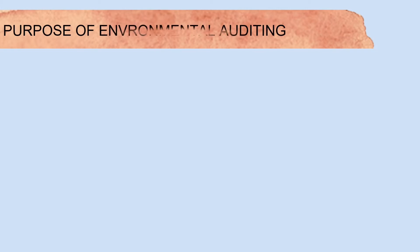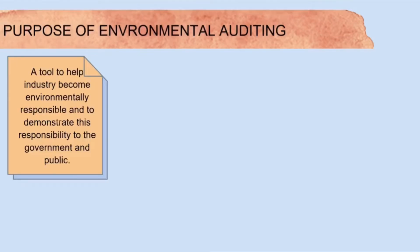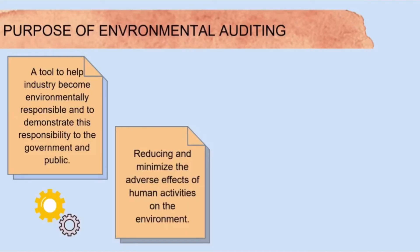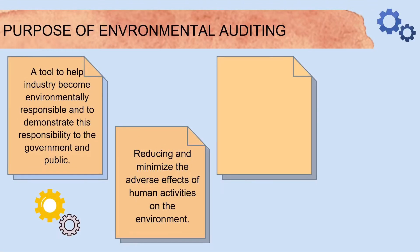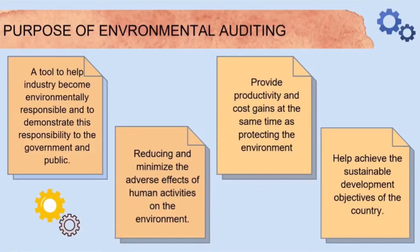What are the purposes of environmental auditing? First, environmental auditing acts as a tool to help industry become environmentally responsible and to demonstrate this responsibility to the government and public. Second, to reduce and minimize the adverse effects of human activities on the environment. Third, to provide productivity and cost gains at the same time as protecting the environment. And lastly, to help achieve the sustainable development objectives of the country.